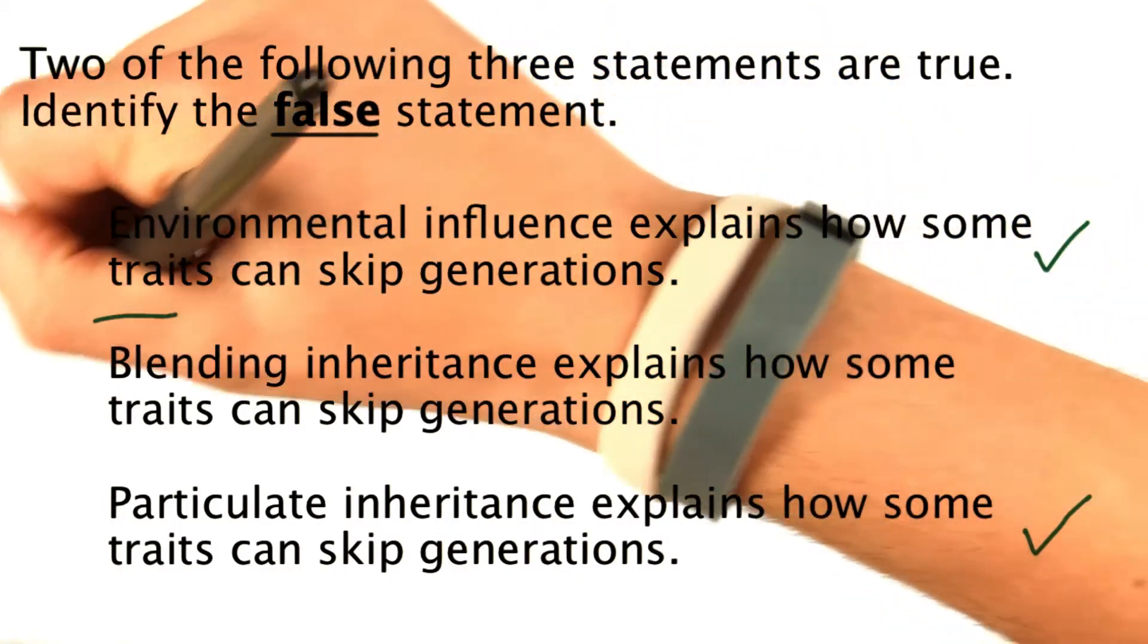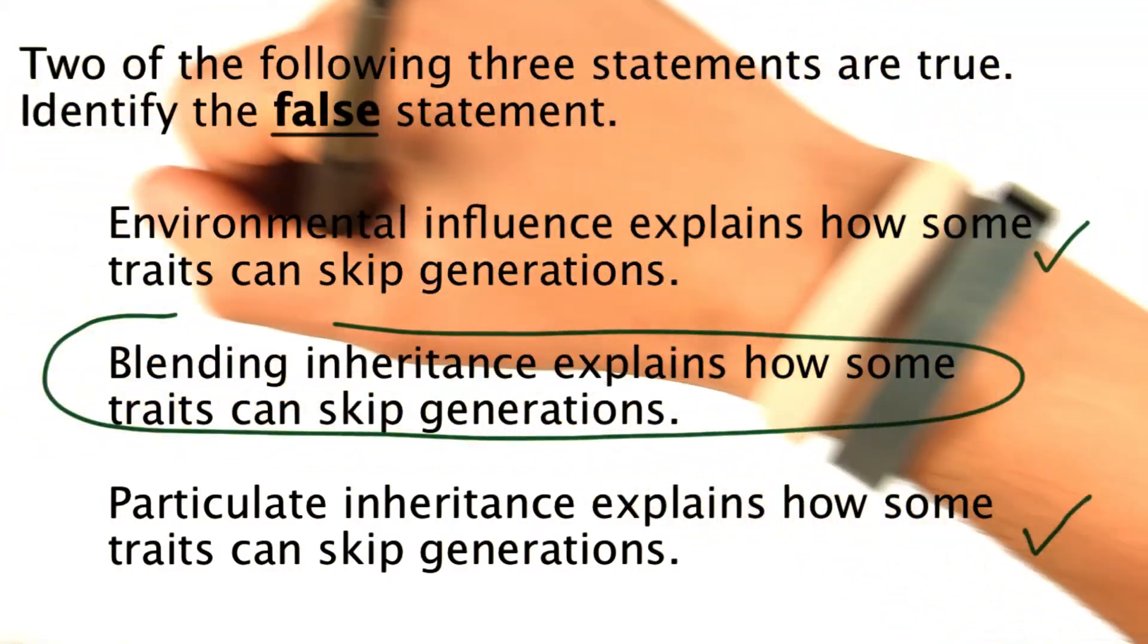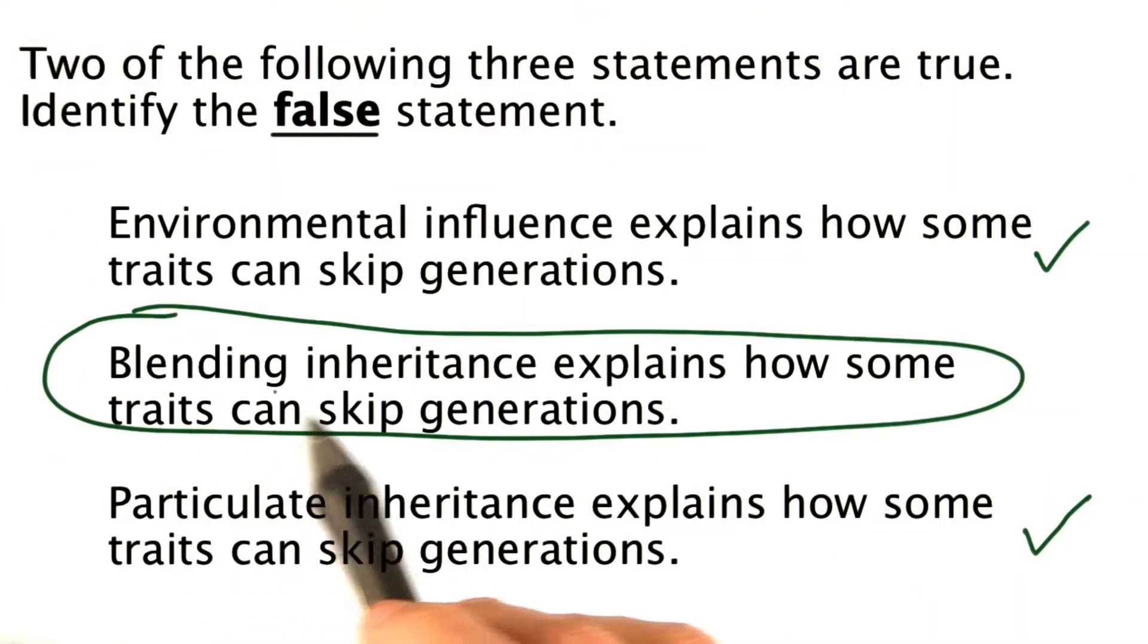But blending inheritance does not explain how some traits skip generations. In this case, blending inheritance describes how parents who have two different types of traits can have an offspring or a child that's a combination of these traits.